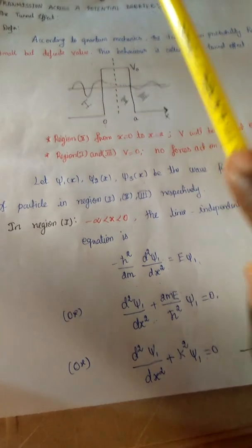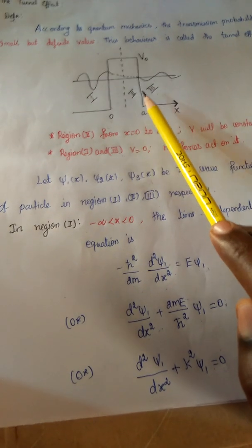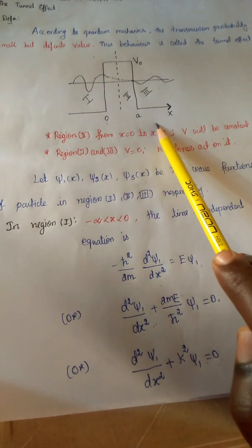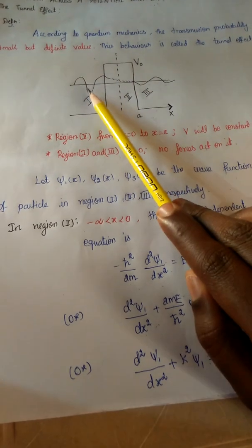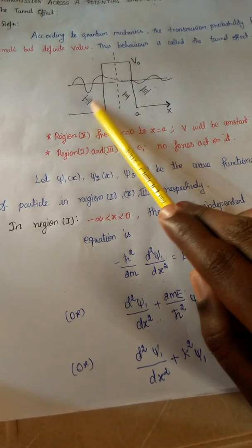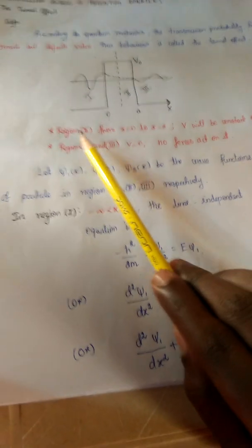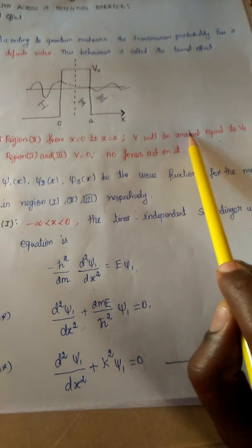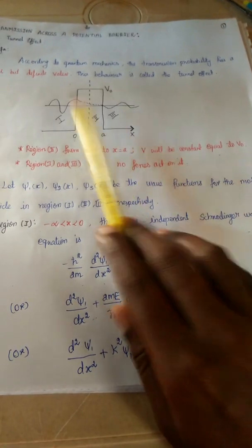We already know the Schrödinger wave equations. First of all, we are considering a rectangular potential barrier of height V₀ and width A for a particle, as shown in the figure. It extends over the region from x = 0 to x = A, in which the potential energy V of the particle is constant and equal to V₀. On both sides, in region 1 and region 3, V = 0, meaning no forces are acting on the particle.